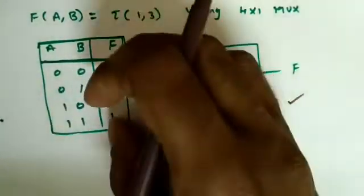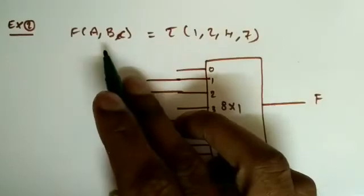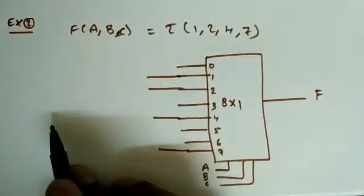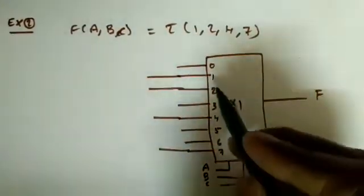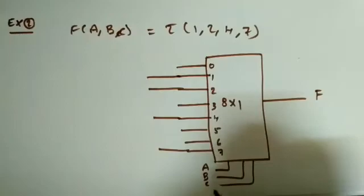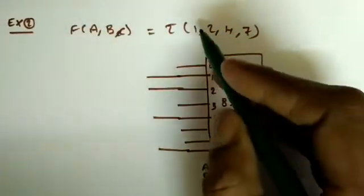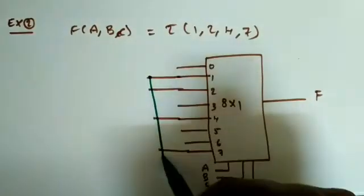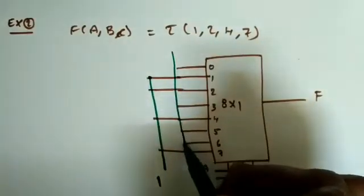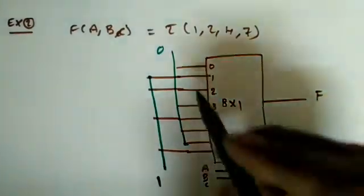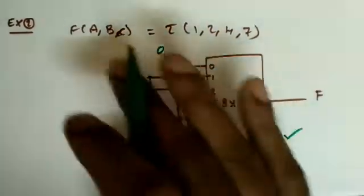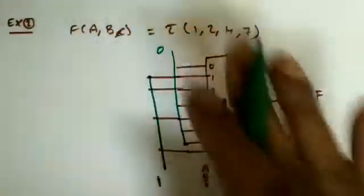For a two-variable function, using a 4×1 MUX is very straightforward — just give the function values directly as inputs. Now for a three-variable function Σ(1, 2, 4, 7), we need an 8×1 MUX because there are three select lines. The positions 1, 2, 4, and 7 get input value 1, and the remaining positions get 0. Depending on the input combinations, it selects either 0 or 1. However, this type of direct question typically does not appear in GATE exams.